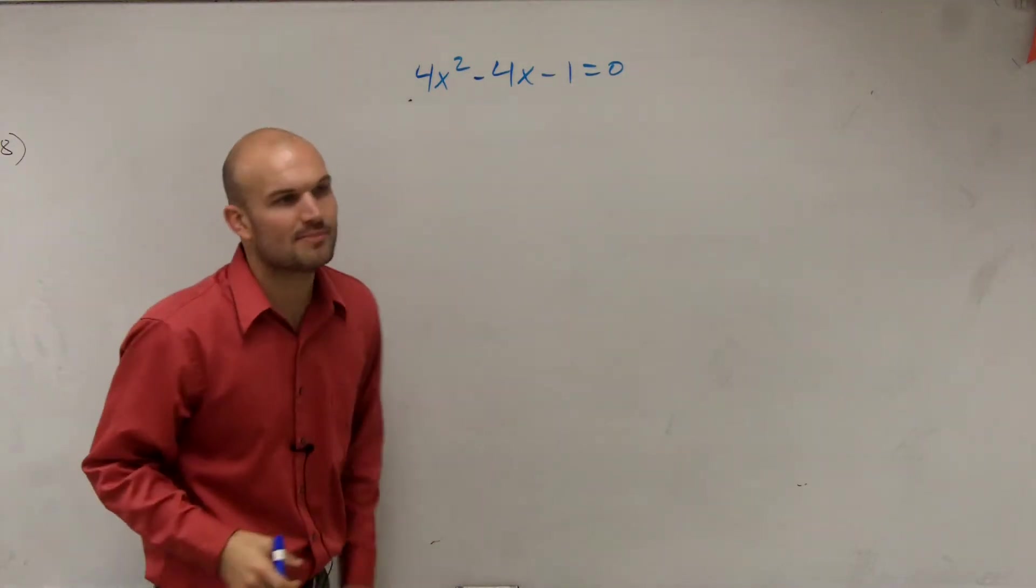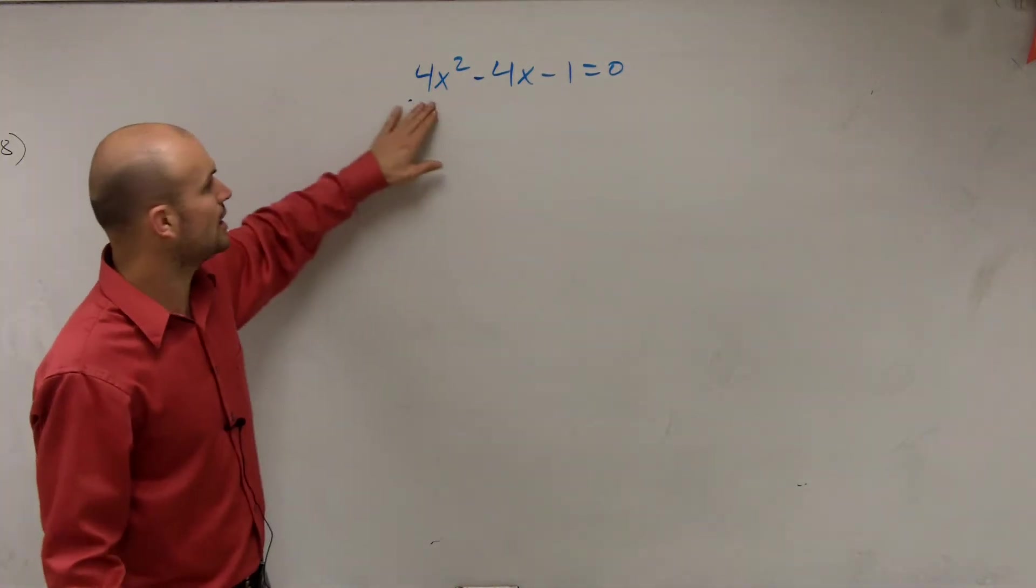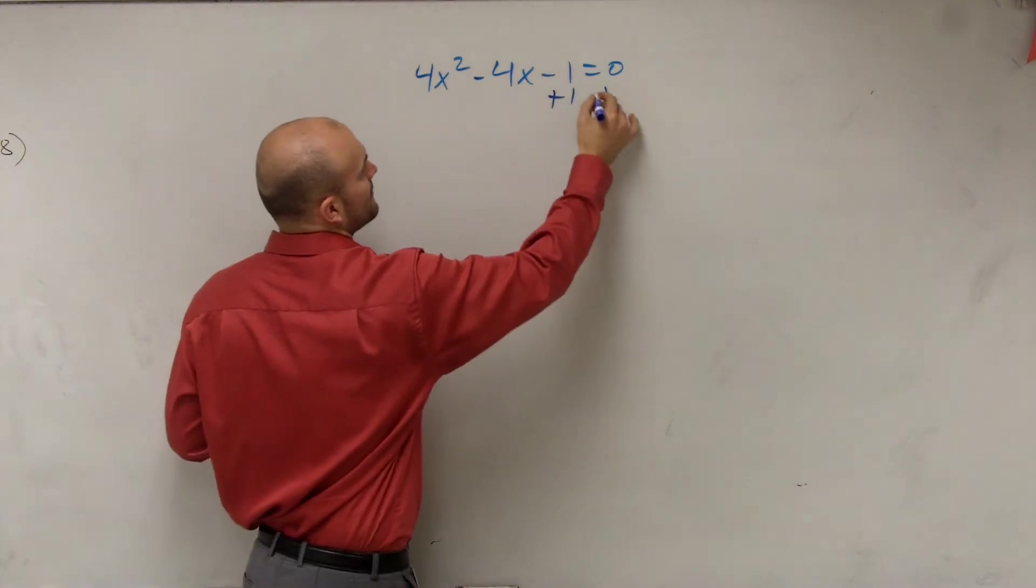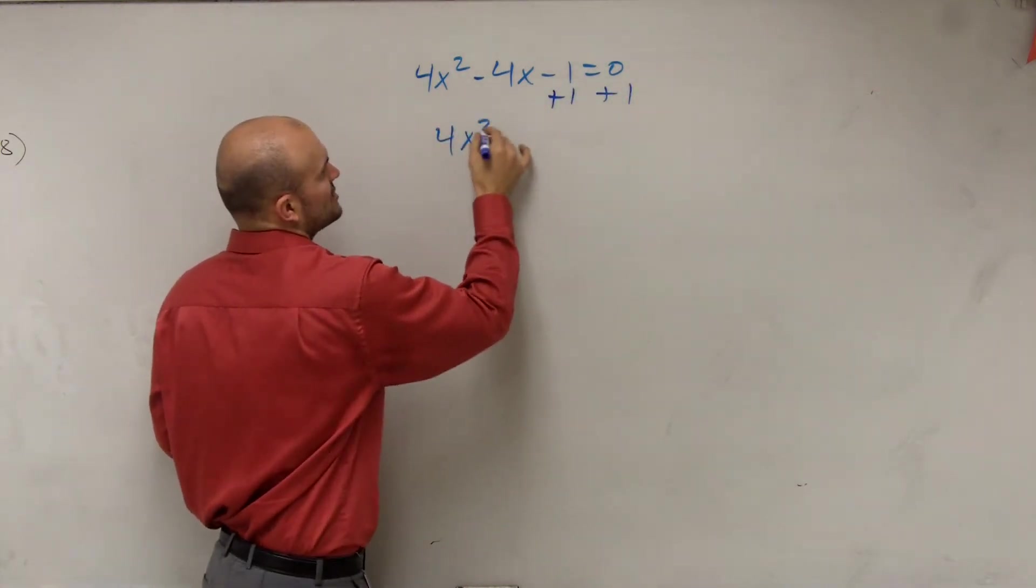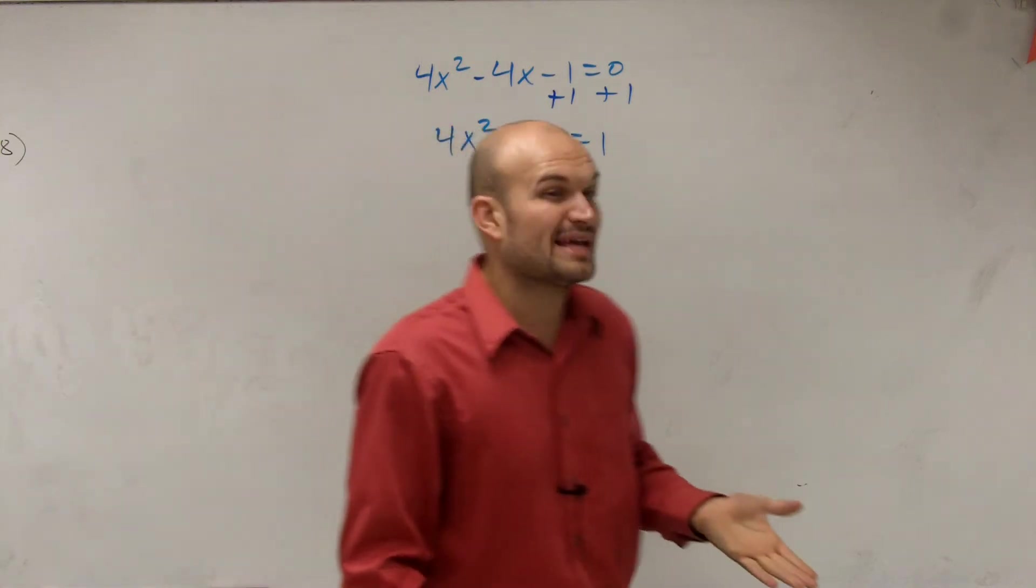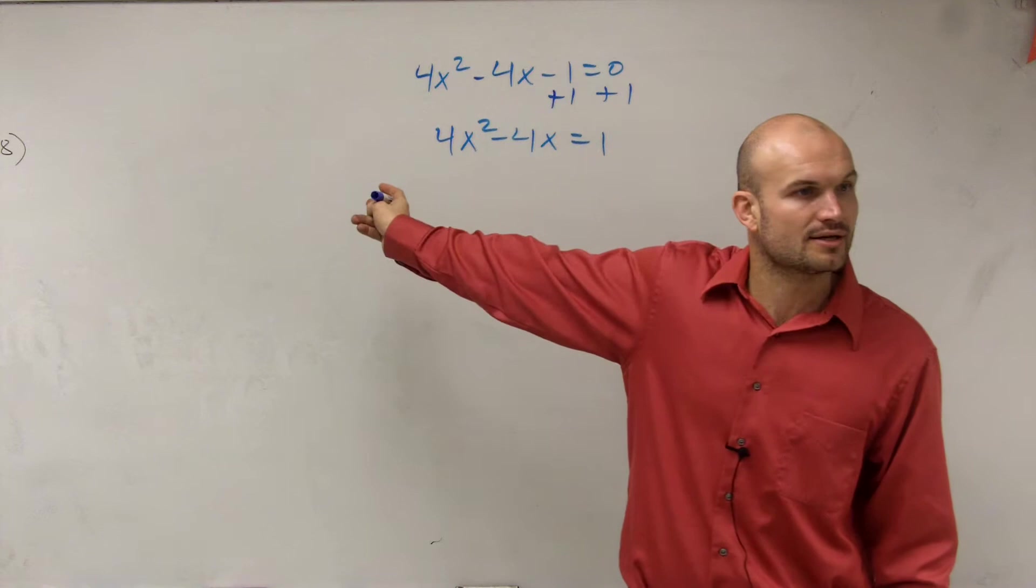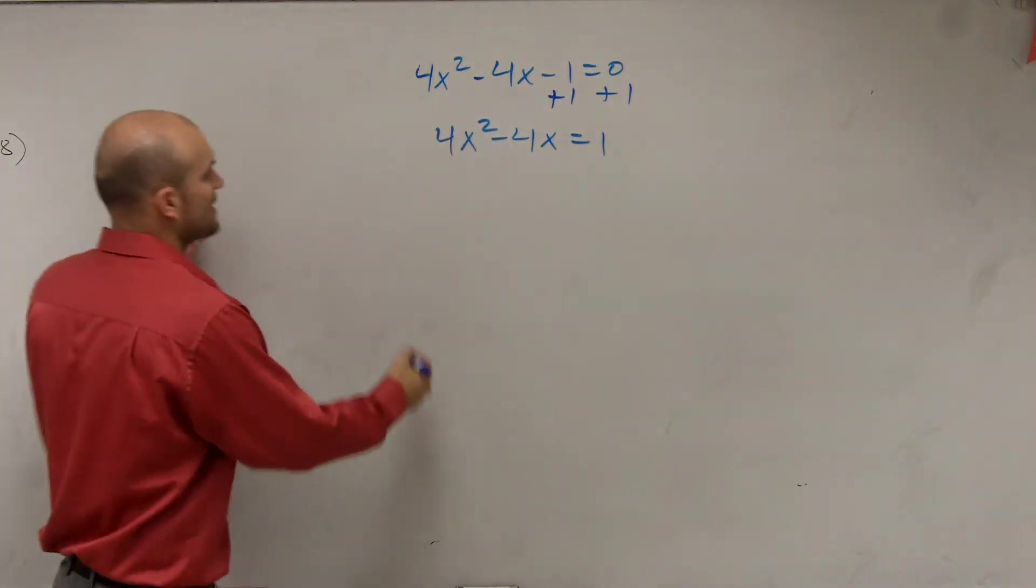So by solving by completing the square, first thing we need to do is isolate our variables. So we get the 1 to the other side. Now I have 4x² minus 4x equals 1. But remember, we can't complete the square when we have a term in front of our quadratic variable. So we need to factor out a 4.